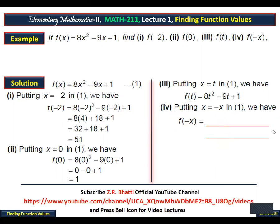Plus 1. Minus x squared gives x². So 8x² plus 9x plus 1. Then quickly: f(-2) we got 51, f(0) we got 1, f(t) we got 8t² - 9t + 1, f(-x) we got 8x² + 9x + 1.